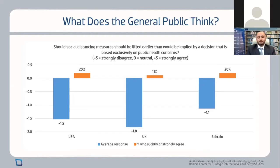The UK had the strongest aversion to lifting lockdowns, which may relate to its significantly higher death rate. The US was in between, and Bahrain had the greatest willingness to lift lockdowns early in pursuit of economic returns. Looking at those who agreed with lifting early, in the US it was around 20%, the UK the lowest at 11%, and Bahrain comparable to the US at around 20% in favor of early lifting.